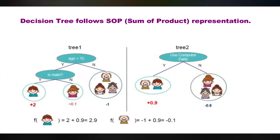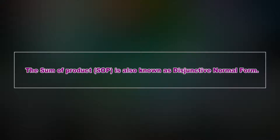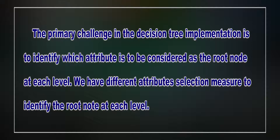Decision tree follows a sum of product representation known as SOP. The picture shows how we can predict the computer usage daily by traversing from the root node to the leaf node. The SOP is also known as disjunctive normal form. For a class, every branch from the root to a leaf node having the same class forms a product. Different branches ending in that class form a sum. The primary challenge in decision tree implementation is to identify which attribute is to be considered as the root node at each level.